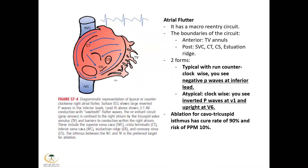Atrial flutter has a macro-reentry circuit and you need to know its boundaries. Anterior boundaries are the tricuspid valve and IVC. Posterior boundaries are the SVC, crista terminalis, and coronary sinus. There are two forms: typical atrial flutter, which goes counterclockwise and shows negative flutter waves in inferior leads; and atypical, which goes clockwise with inverted flutter waves at V1 and upright at V6. Ablation of the cavo-tricuspid isthmus has a 90% success rate, but the remaining 10% of patients are at risk of requiring a pacemaker.